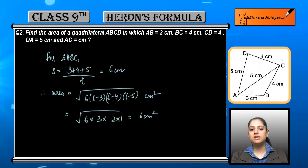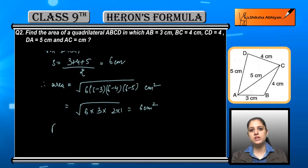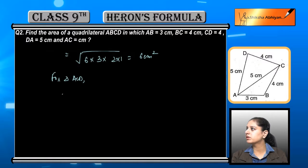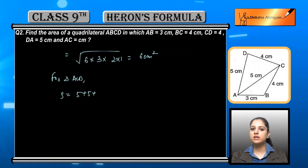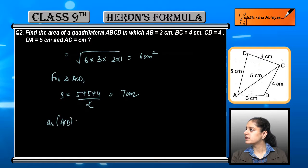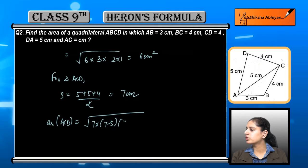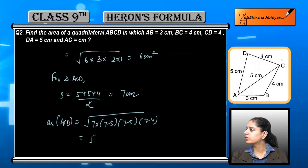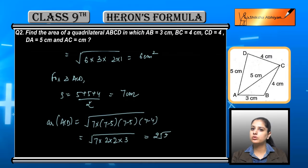For triangle ACD, the semi-perimeter is 7. Applying Heron's formula: under root of 7 × (7−5) × (7−5) × (7−4), which gives under root of 7 × 2 × 2 × 3, equal to 2√21 cm². So we now have both areas separately.